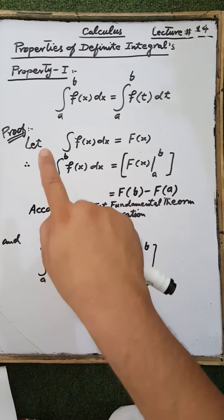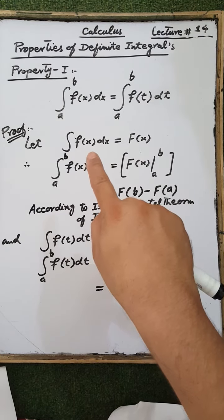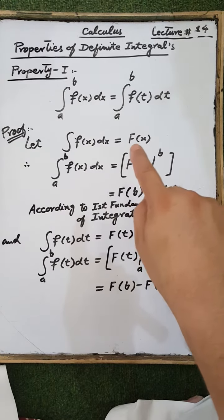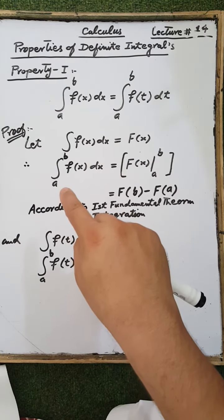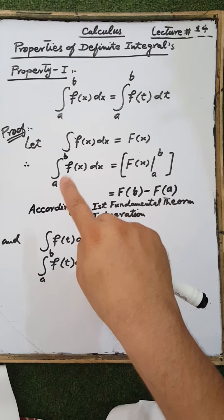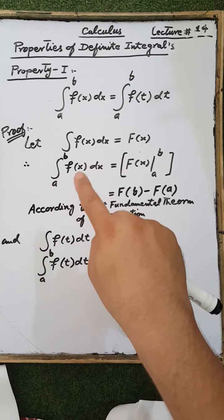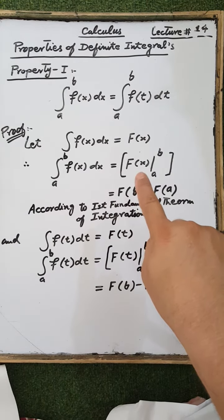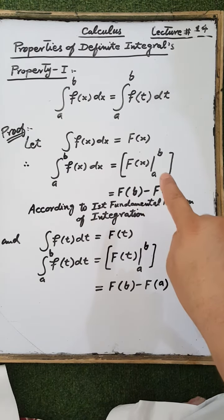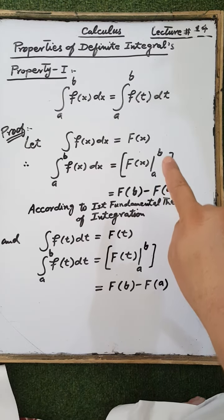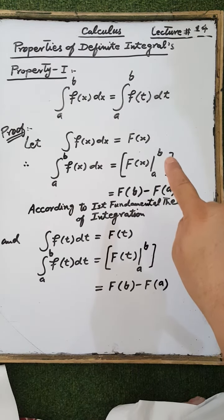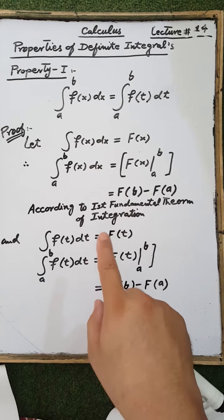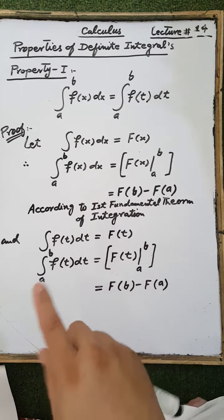Proof: Suppose that the integration of the function f(x) is equal to capital F(x). Applying the lower and upper limits of integration on the function f(x) dx gives capital F(x) evaluated from a to b, which is equal to F(b) minus F(a), according to the first fundamental theorem of integration.